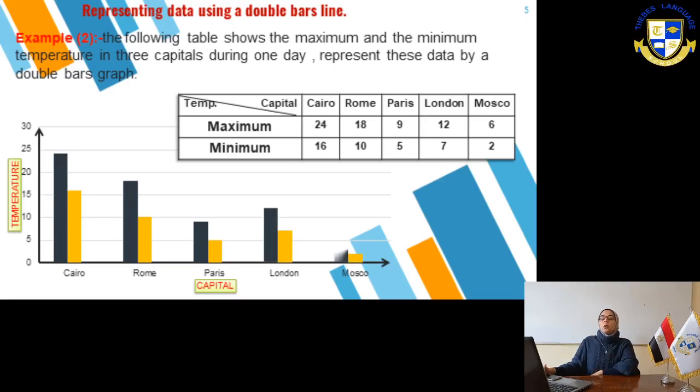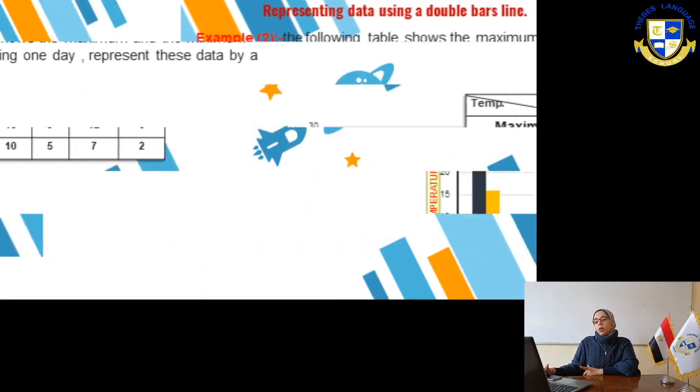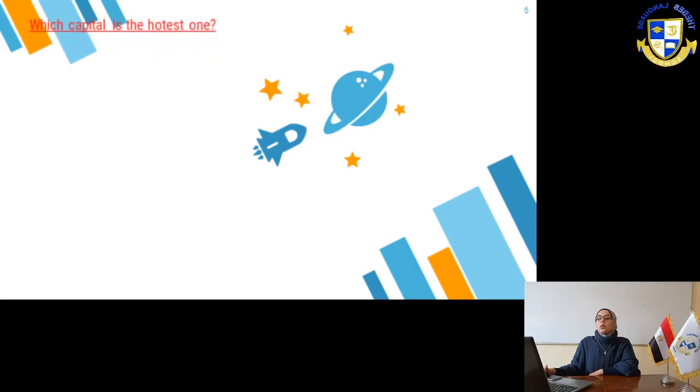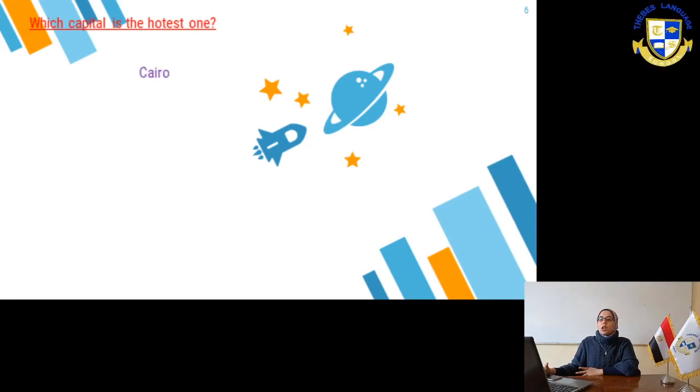Now, we have double bars for each capital to represent the maximum and the minimum temperature of them. Now, we have a question on this example. Which capital is the hottest one? Cairo. Cairo is the hottest because it has the maximum temperature. Which capital is the coldest one? Moscow was the coldest capital.